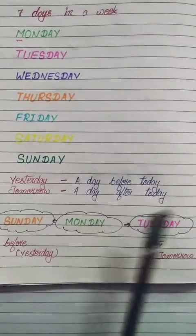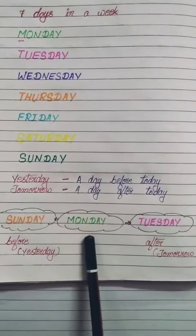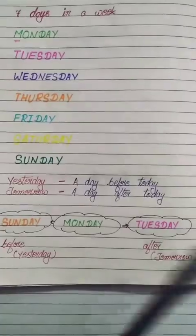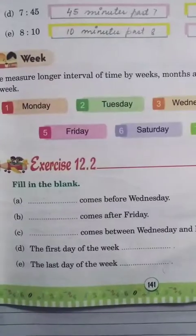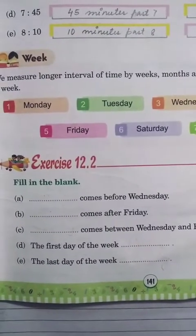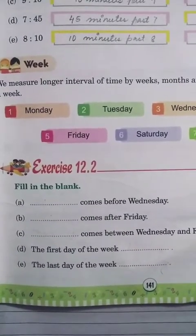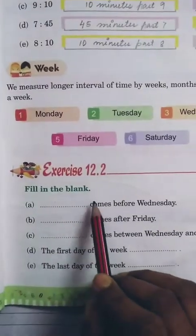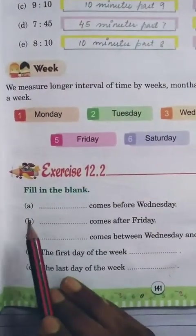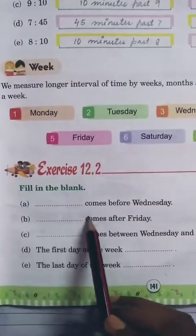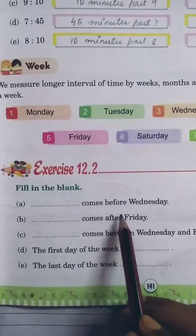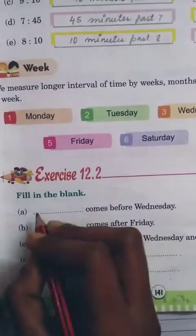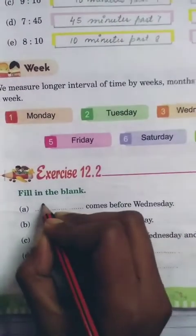Between means the middle one. Now let's do the exercise — fill in the blanks. Question A: what comes before Wednesday? That is Tuesday.